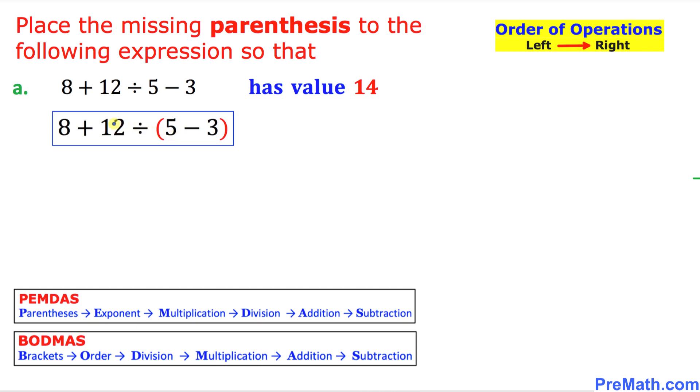Now let's justify whether these parentheses are in the right place. Let's simplify this using PEMDAS, or sometimes we call it BODMAS rule. The very first thing is we are going to take care of this part first. Inside these parentheses, 5 minus 3 is going to be 2, and the rest we are going to just leave as it is.